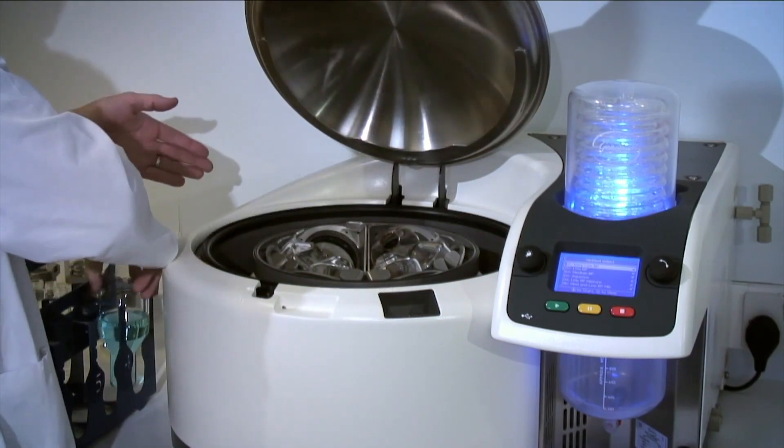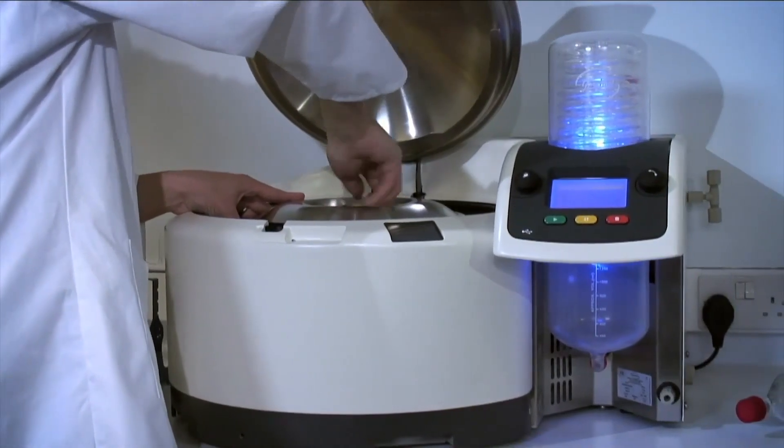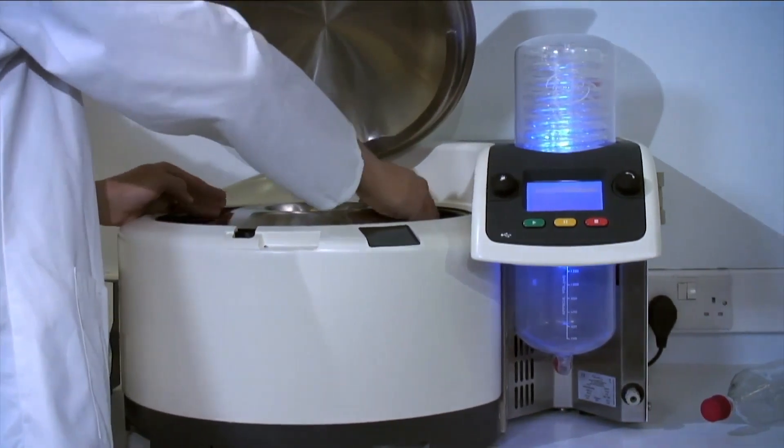Using the rocket is simple. Load your flasks or pucks of tubes into the rotor. Secure the inner lid. Check the water level.